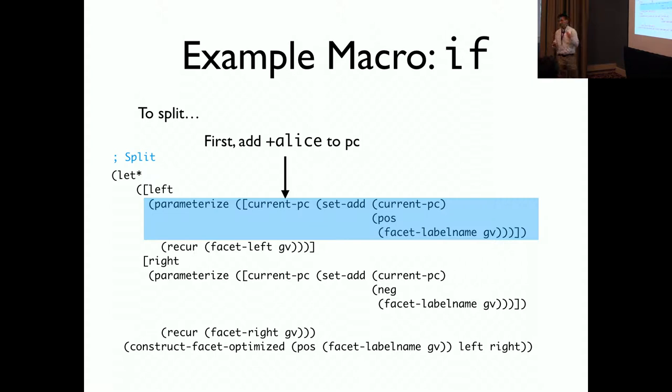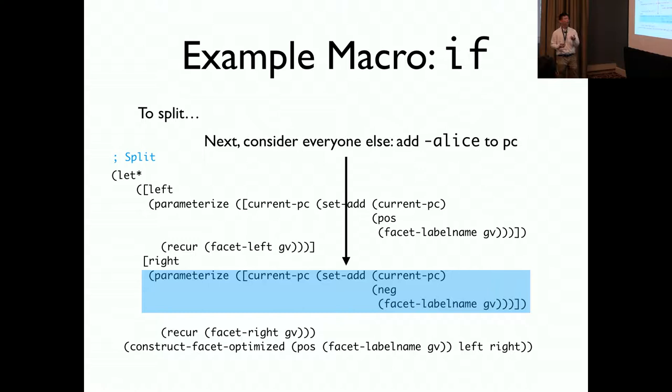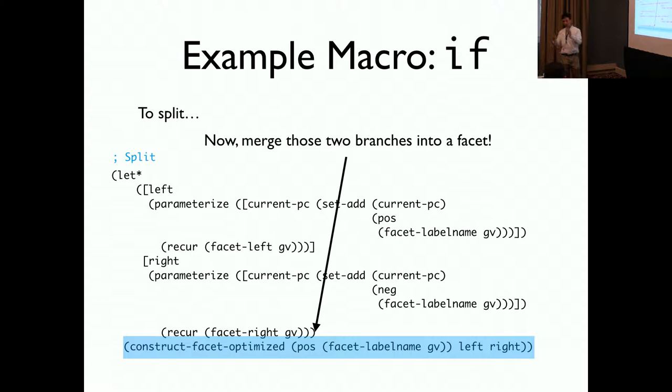To split, first we add the positive label, in this case positive Alice, to the PC, to the program counter. And then we perform that computation as Alice to see it. Then we consider everyone else by adding the negative label, negative Alice, into the program counter. And then we execute the branch as everyone else. Finally, once we evaluate those two branches, we merge the result from those two branches into a new facet by using construct-facet-optimize.